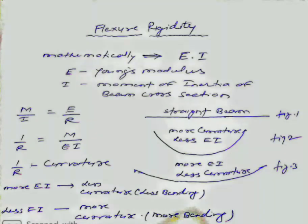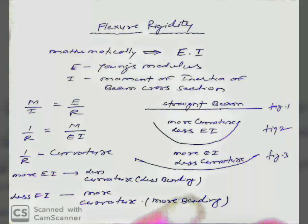More EI means less bending, whereas less EI means more bending.